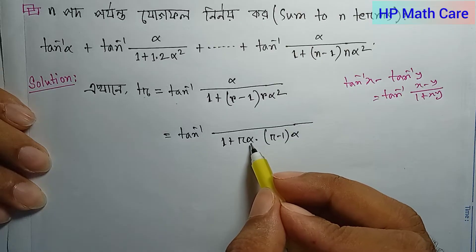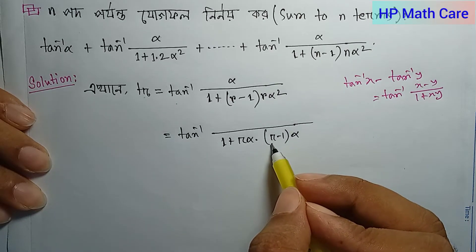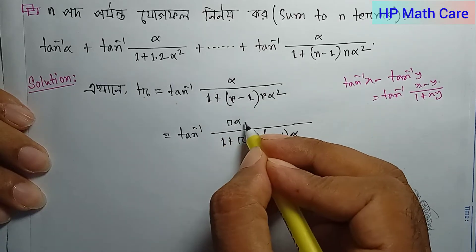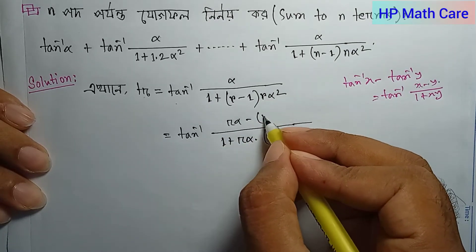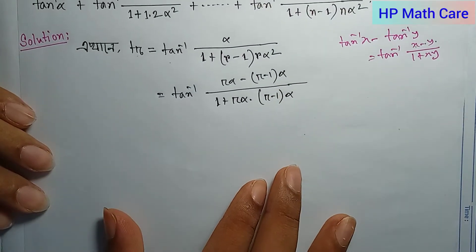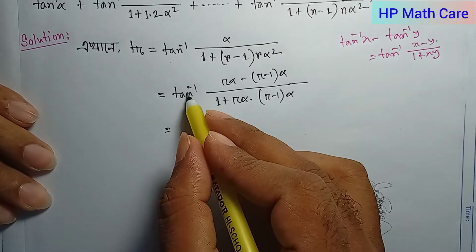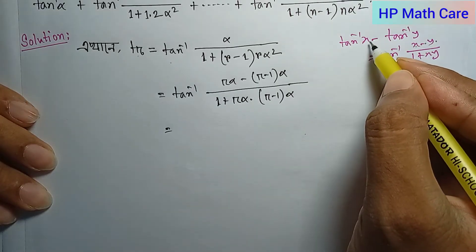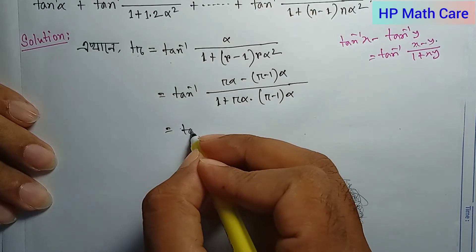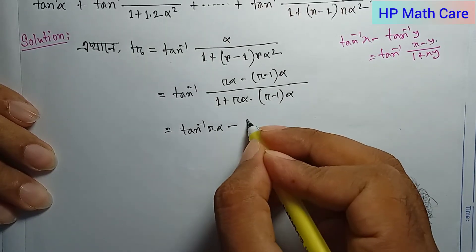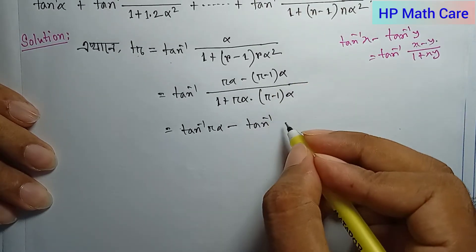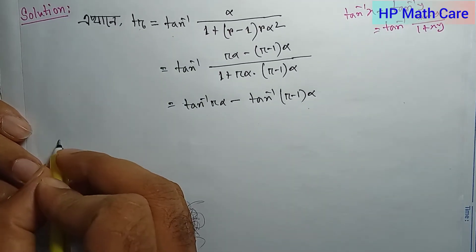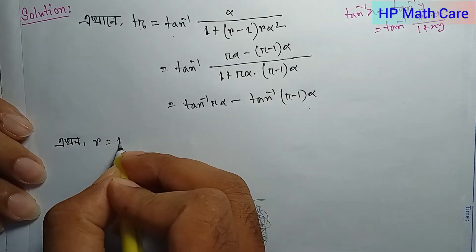Applying this formula: with x equal to r·alpha and y equal to (r minus 1)·alpha, the numerator becomes r·alpha minus (r minus 1)·alpha, and the denominator becomes 1 plus r·alpha times (r minus 1)·alpha. So we get tan⁻¹(r·alpha) minus tan⁻¹((r minus 1)·alpha).